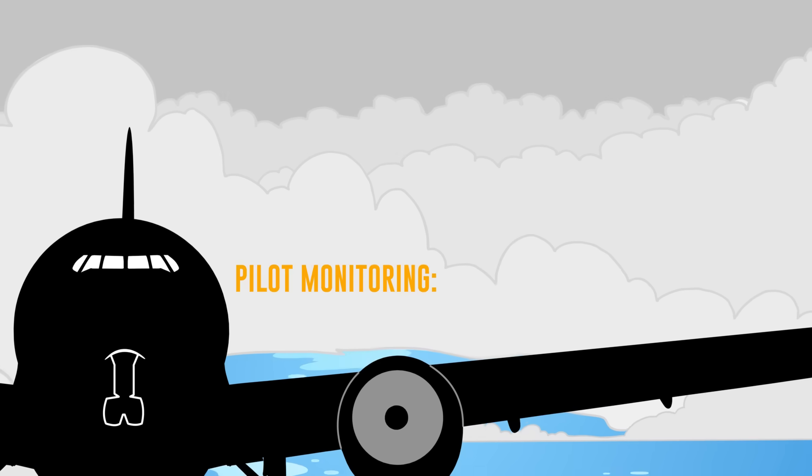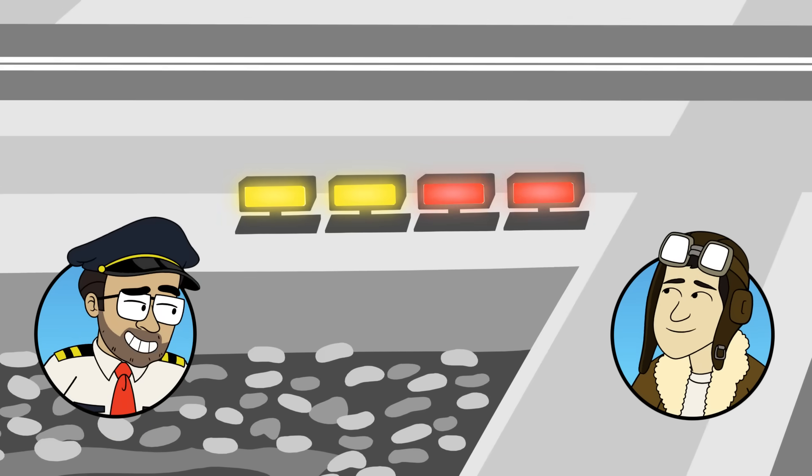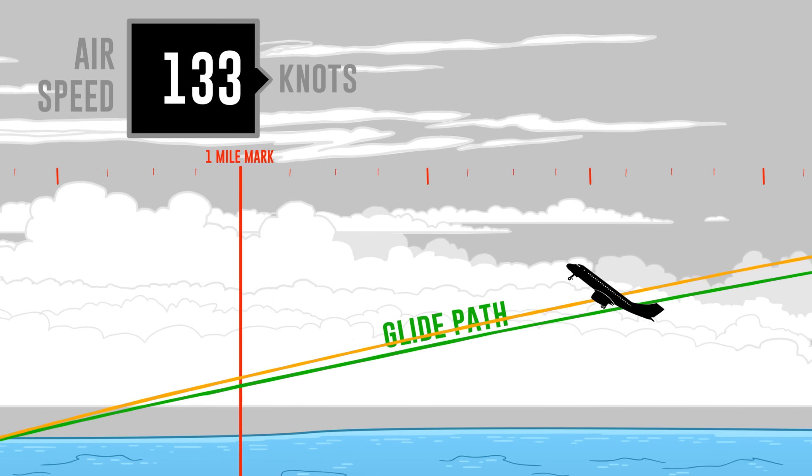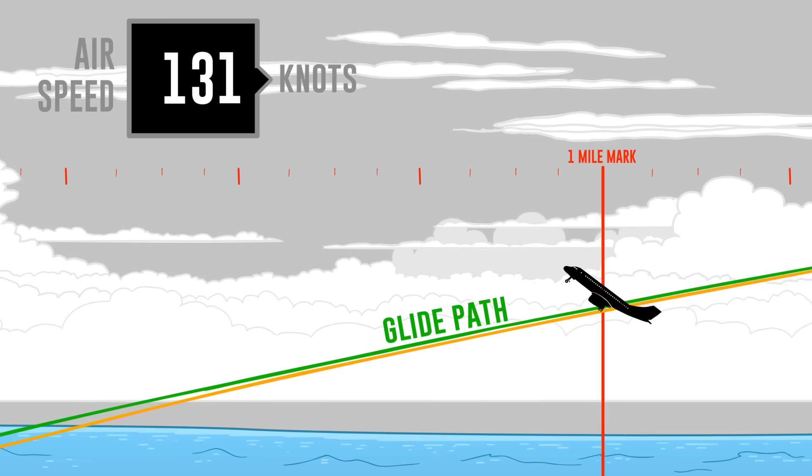The airspeed then dropped below 137 knots. And they began their landing checklist. When that was done, the pilot monitoring said, on glide path, sir. And the PAPI actually showed two white, two red. So they did it. The airspeed then descended below 132 knots, which was their landing speed, but they were one mile away from the runway.